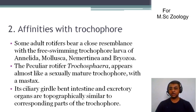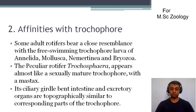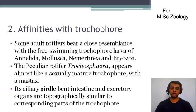The ciliary girdle band, intestine, and excretory organs are topographically similar to corresponding parts of the trochophore — meaning this alimentary canal, the intestine, and the excretory organ are topographically similar to the corresponding parts of the trochophore larva.